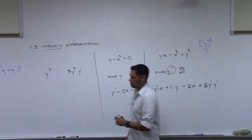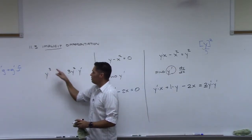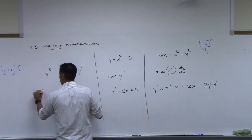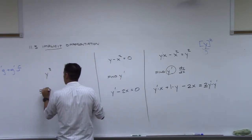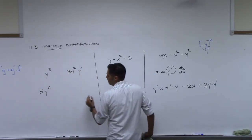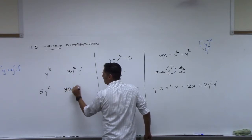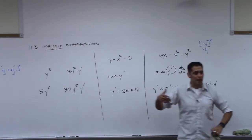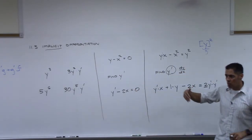The three comes out, y squared, then derivative of y is y prime. What would the derivative of 5y to the 6th be? 30y to the 5th times y prime. So you're always going to have that y prime pop out.